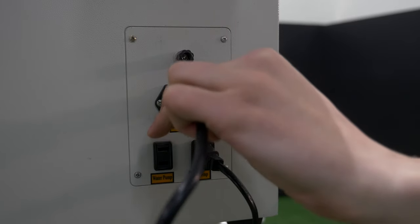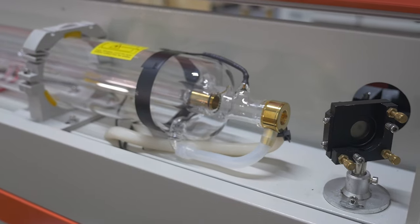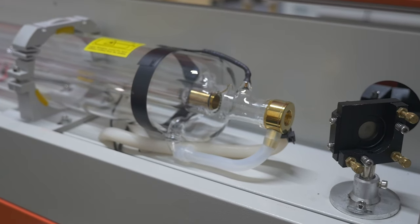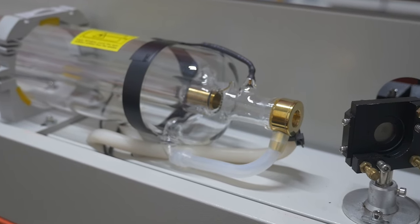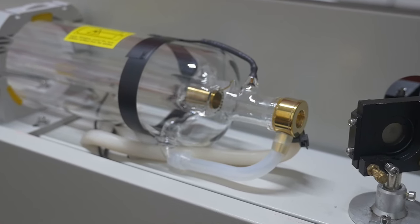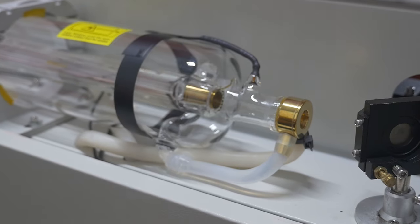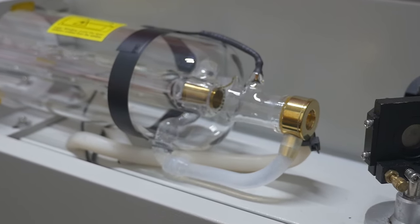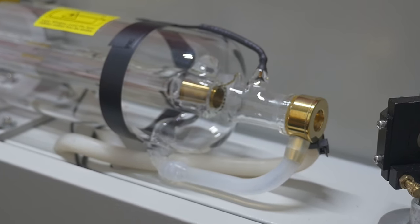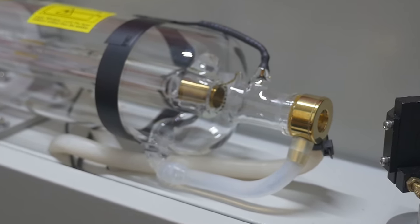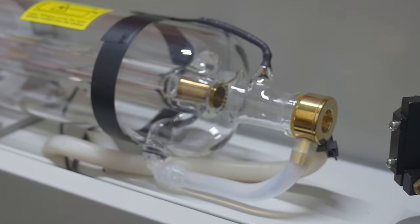Turn on the machine. Switch on the chiller and the laser tube is filled with water. For the chiller, use distilled water only with no other components. As the tube is filled with water, make sure there are no bubbles inside. Any bubble inside the tube can cause the tube to crack and fail permanently due to temperature differences.